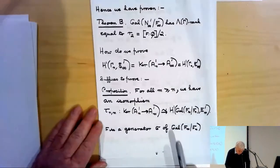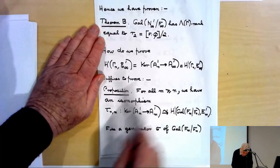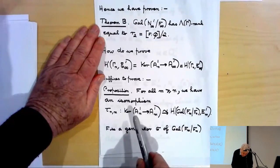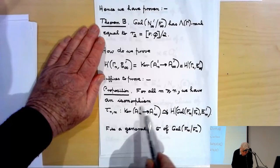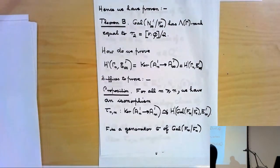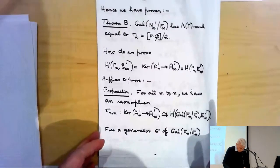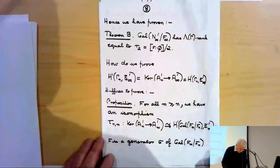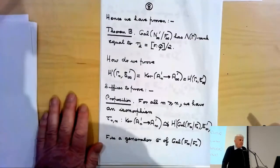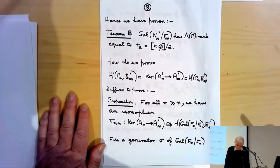I'll actually prove the proposition for the map from A_n' to A_m' for all m ≥ n, giving the map in that direction, and once we have this theorem we pass to the inductive limit over all m ≥ n. Fix a generator σ of the Galois group of F_m over F_n, which is a cyclic group of order p^{m-n}. Write O_n', O_m' for the rings of p-integers of the fields F_n and F_m.